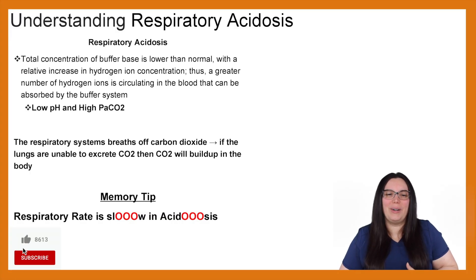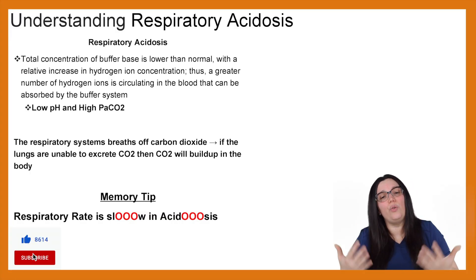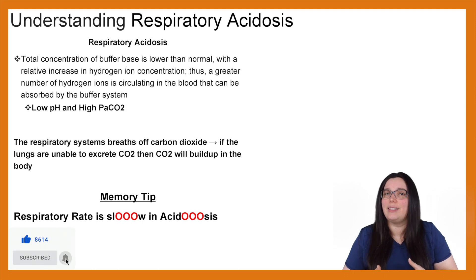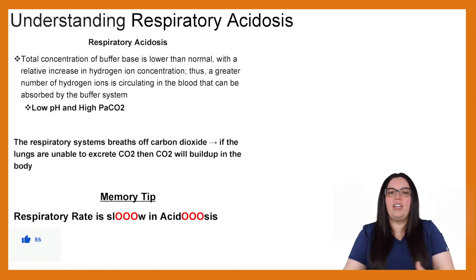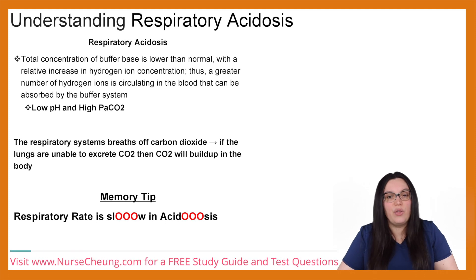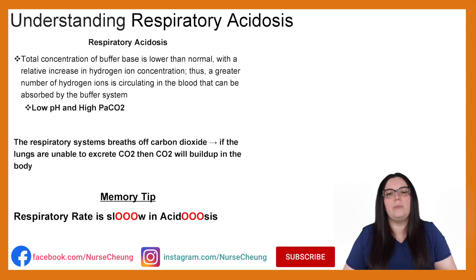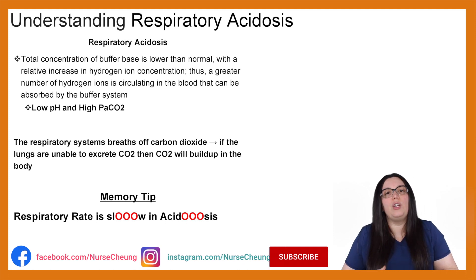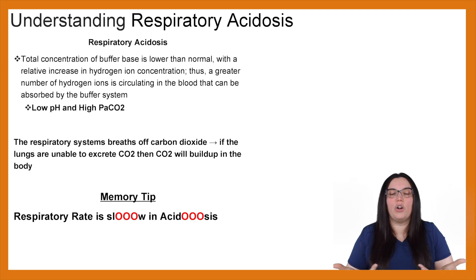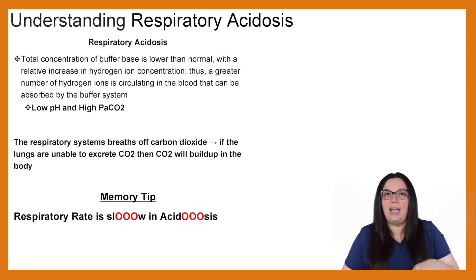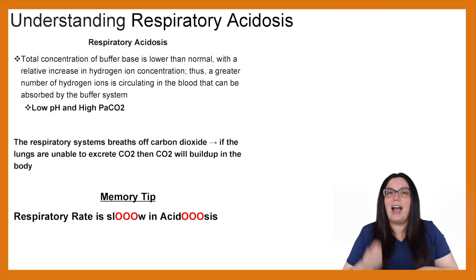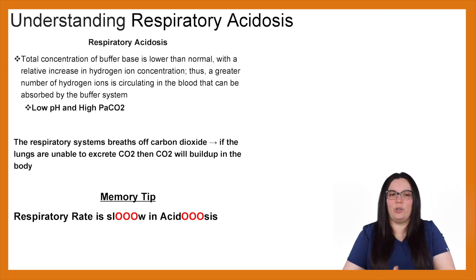When it comes to respiratory acidosis, it really is the total concentration of buffer base being less than normal, with a relative increase in hydrogen ion concentration — thus a greater number of hydrogen ions is circulating in the blood than can be absorbed by the buffer system. We know that hydrogen ions are the more acidic part of our acid-base balance system, so a low pH and a high PaCO2 means respiratory acidosis.